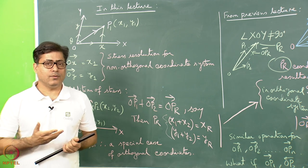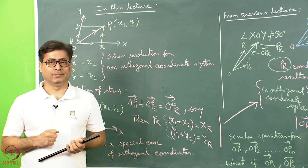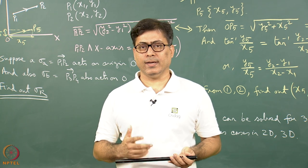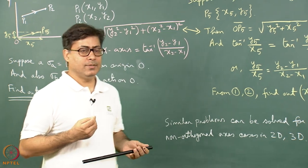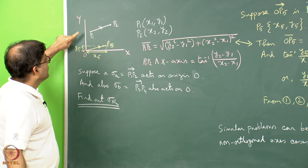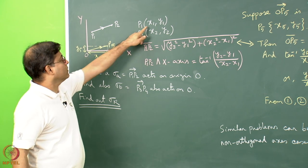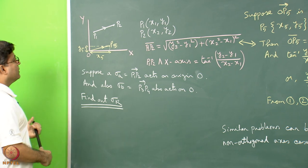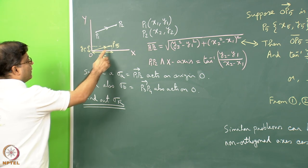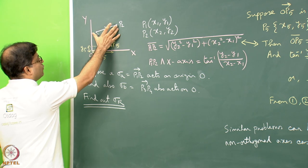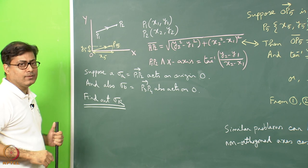As a geology student in an MSc course, try to solve it yourself — it will be a very good self-learning process. Revisiting the 2D case with OX and OY: if a stress acts from P1 to P2, with P1 at (x1, y1) and P2 at (x2, y2), and this same stress is said to act through point O, then we need to find the coordinate of P5, where OP5 is drawn parallel and equal to P1P2.